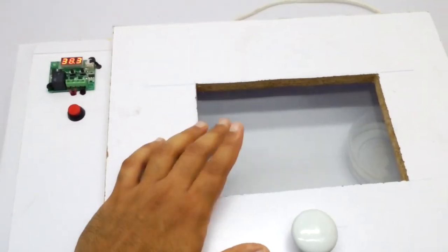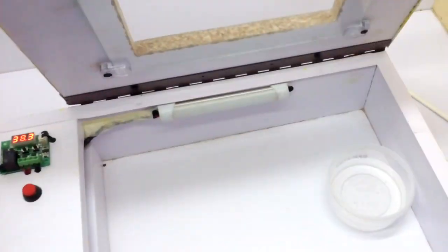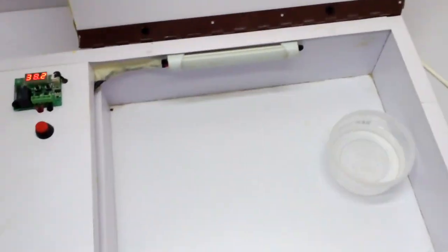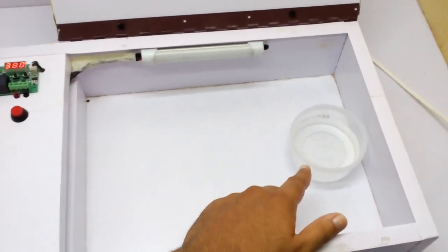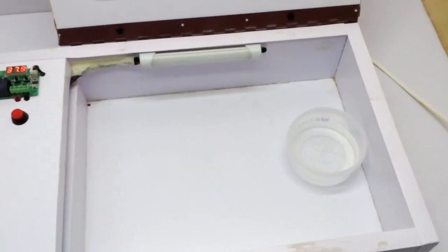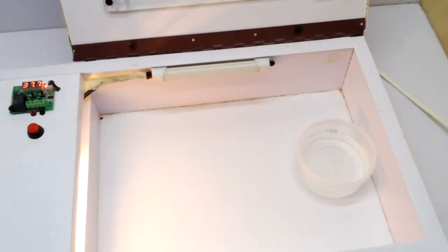From the inside, we have this space for putting the eggs. We have to put the eggs over here and turn the eggs here. This is the bowl for the water. We have to fill up the water every two days or one day.